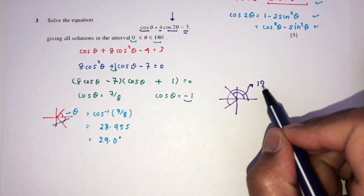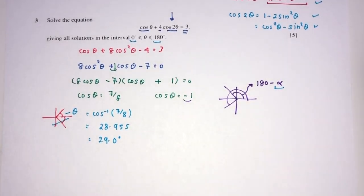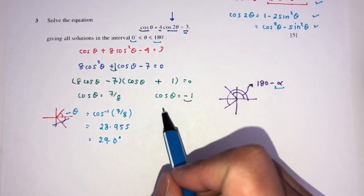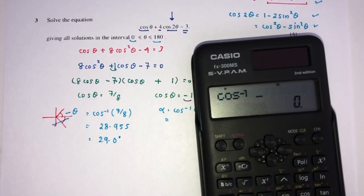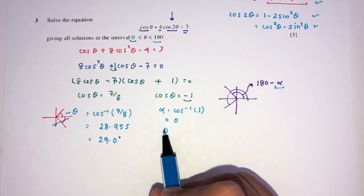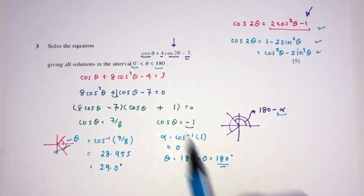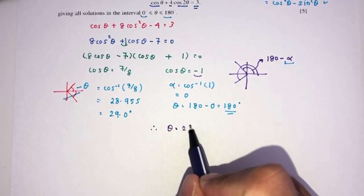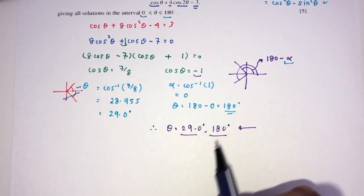For cosθ = −1, a negative cosine means we use the second quadrant. We find alpha = cos inverse of 1, which is 0 degrees. So θ = 180 minus 0, which is 180 degrees. This is included in the domain. So the two values of θ are 29.0 degrees and 180 degrees.